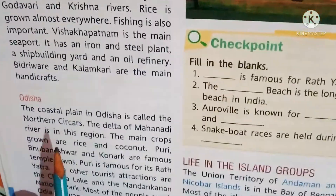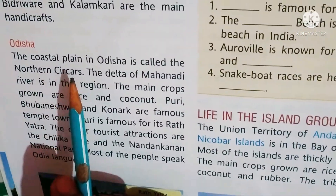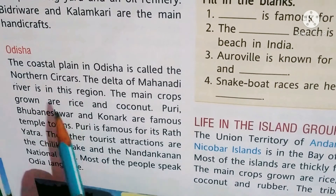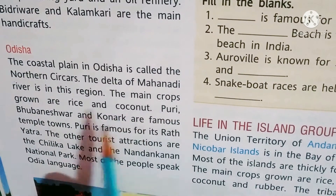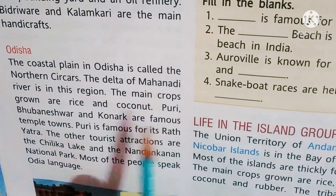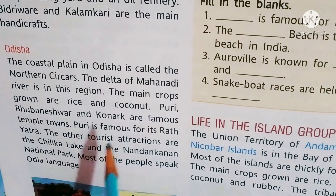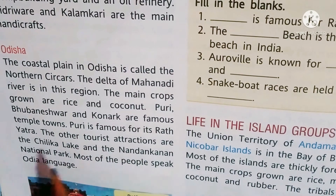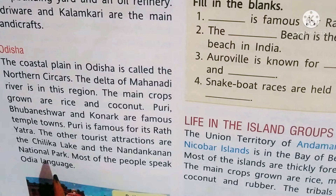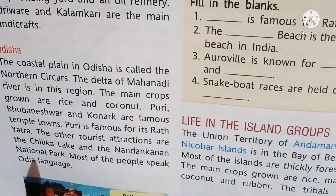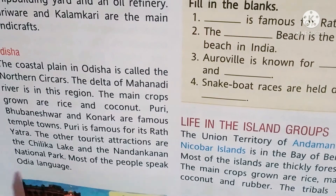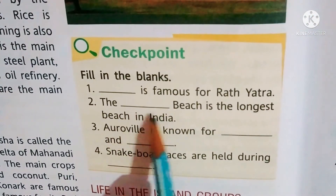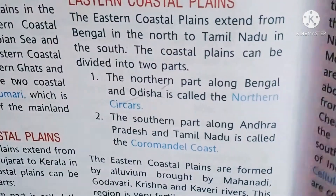The northern coastal plains of Odisha are called the Northern Circars. The delta of the Mahanadi river is here. The main crop grown is rice. Famous temple towns and tourist attractions include Chilka Lake and the Bhitarkanika National Park. Most people speak Odia. Puri is famous for the Rath Yatra.